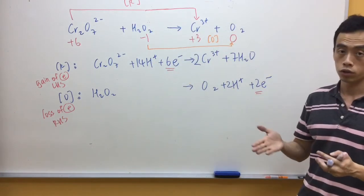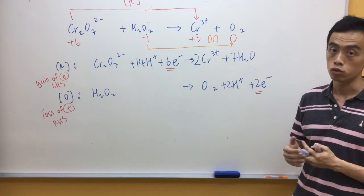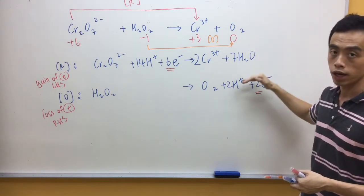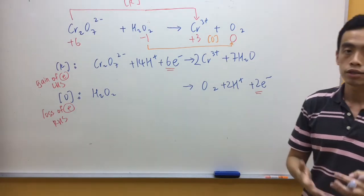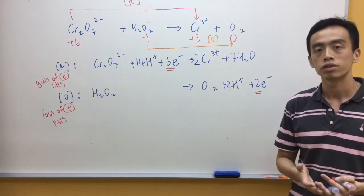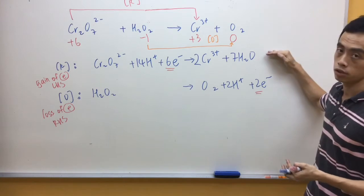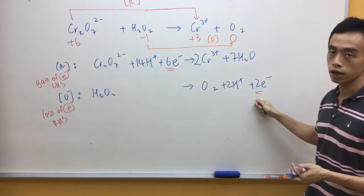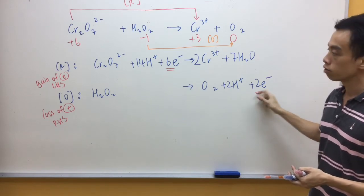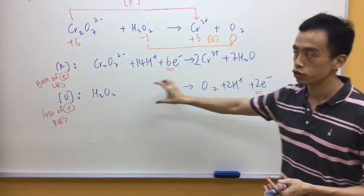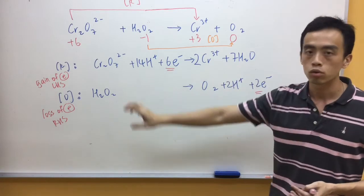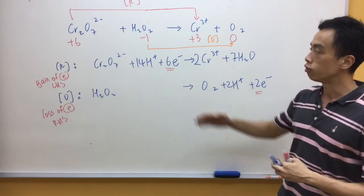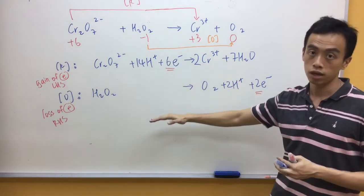Now that I have the 2 half equations balanced, what I need to do next is to combine the 2 half equations together. Now in order for me to add the 2 equations together, I need to make sure that the total number of electrons on both sides of the equations are the same. In this case the first equation I have 6 electrons for my reduction half equation. I have only 2 electrons on my oxidation half equation. So for oxidation half equation I need to multiply this entire coefficient by 3, so that I will have the same number of electrons for both my reduction half equation and oxidation half equation.